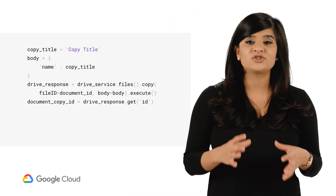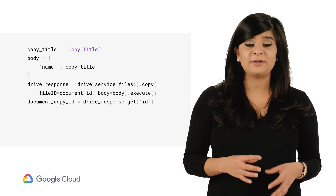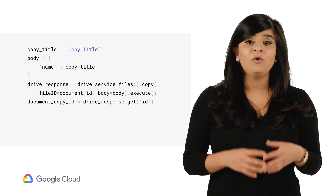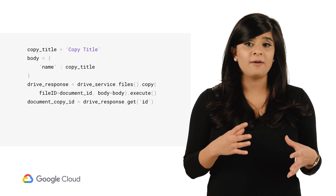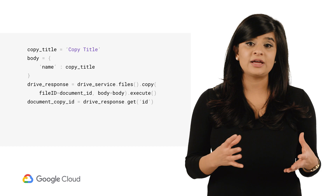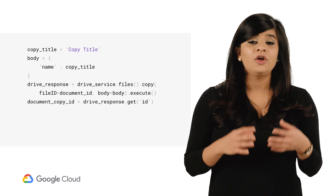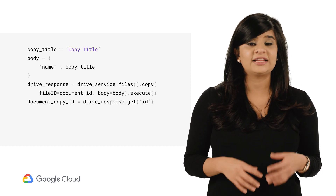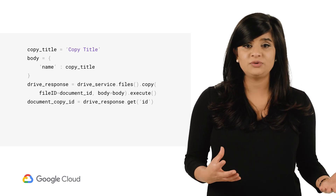Maybe you've already built yourself a productivity hack. Instead of creating a new empty document every time, you simply make a copy of your company's invoice template. Well done. Here is where the Drive API has helped many people speed up their workday. With the drive.copy and the file ID of your template document, your service can programmatically create as many copies as you need.